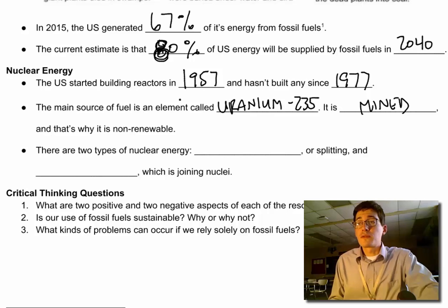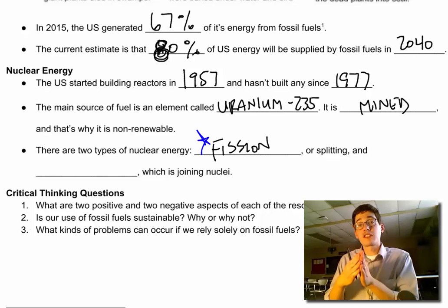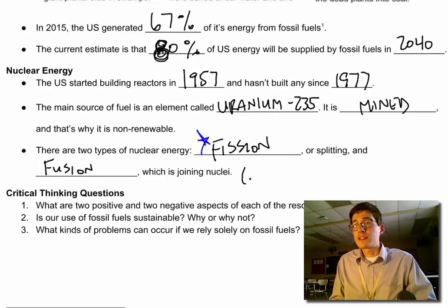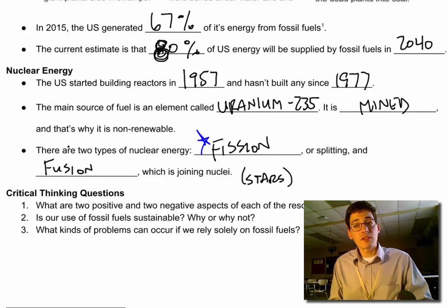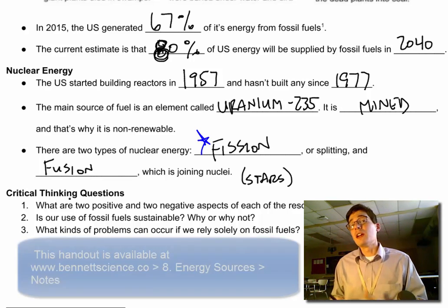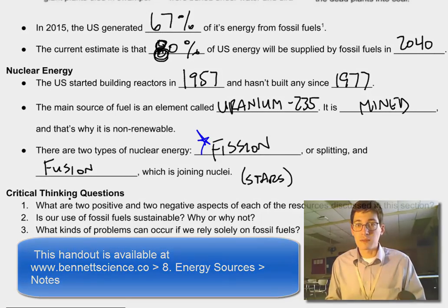There are two kinds of nuclear energy. There's fission, which is what we do — we can take atoms and split them. But there's also a reaction called fusion, which is joining nuclei, and this happens in stars. Stars are big fusion reactors. We cannot do this yet, but it's something we're working on, and we'll talk about why later. If you have questions about anything, feel free to leave a comment below, or ask me in class if you're one of my students. Thank you for watching, and we'll see you with the next video.